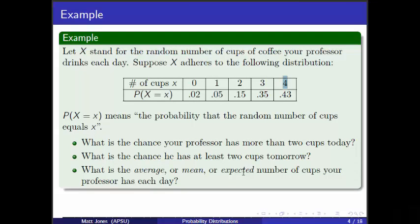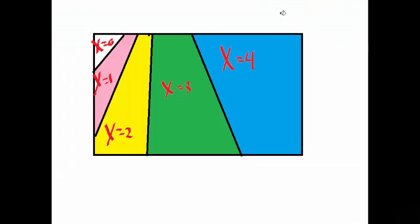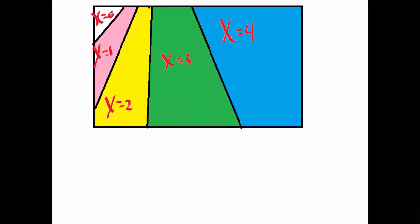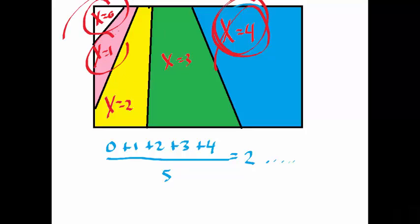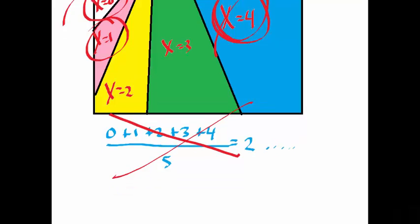What is the average or mean or expected number of cups your professor has each day? The weights are all different, so I can't just average 0 + 1 + 2 + 3 + 4 and divide by 5 to get 2 — that's not correct, because there's a big heavy weight where X = 4. That happens much more often than X = 0 or X = 1. So we want to take a weighted average, just like when we weight your course grades.